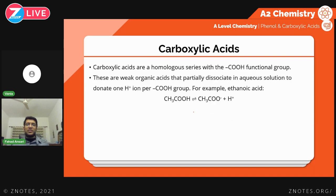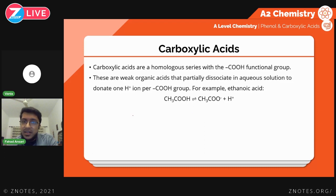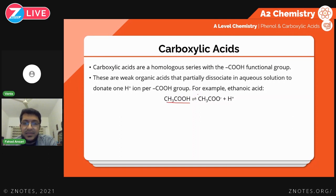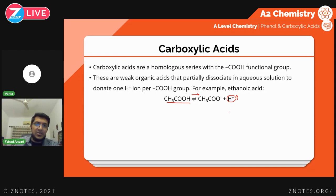Now moving to carboxylic acids. Carboxylic acids are weak organic acids; however, they are stronger than phenol, water, and ethanol. The reason is a greater degree of dissociation — more molecules of a carboxylic acid like ethanoic acid will dissociate, giving a higher concentration of H+ in solution and therefore a lower pH and greater acidity. There are two reasons for this.